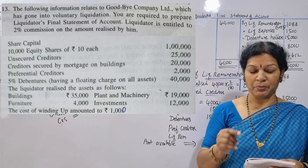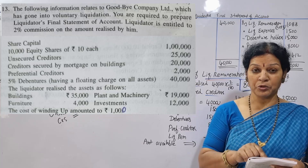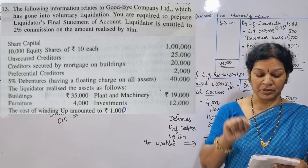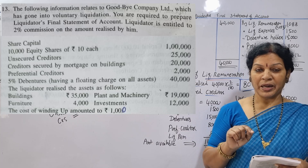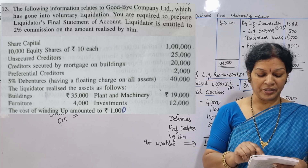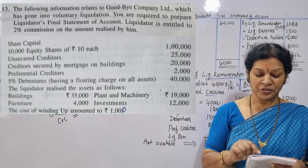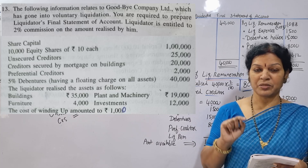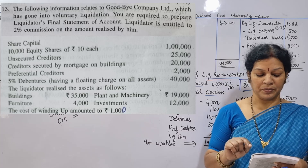The building is $35,000. The plant and machinery is $19,000. The furniture is $4,000. The investments are $12,000.